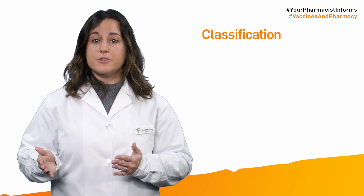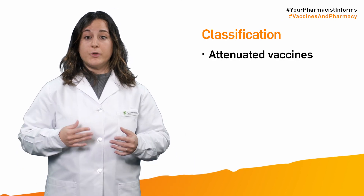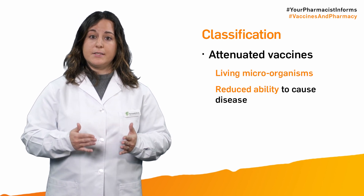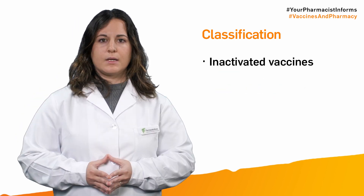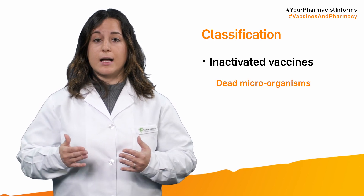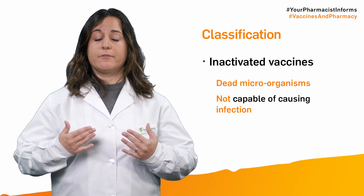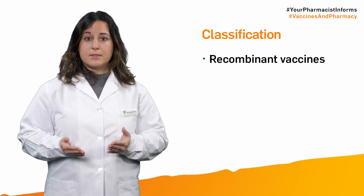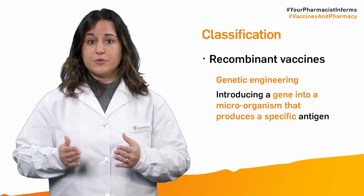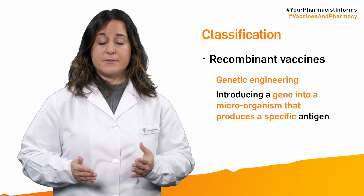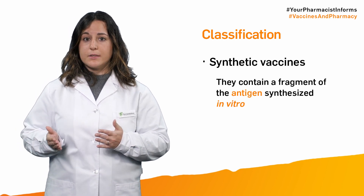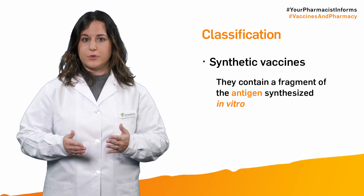Vaccines can also be classified as attenuated vaccines — these contain living microorganisms whose ability to cause disease is reduced. Inactivated vaccines are made from dead microorganisms and are therefore not capable of causing infection. Recombinant vaccines are obtained by genetic engineering, introducing a gene into a microorganism that produces a specific antigen. Synthetic vaccines contain a fragment of the antigen synthesized in vitro.